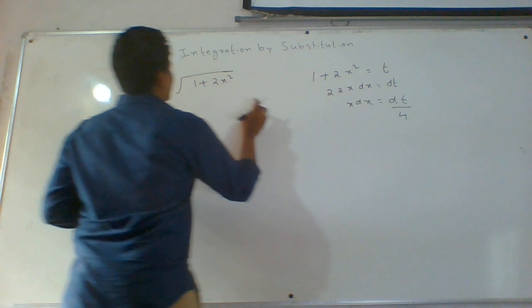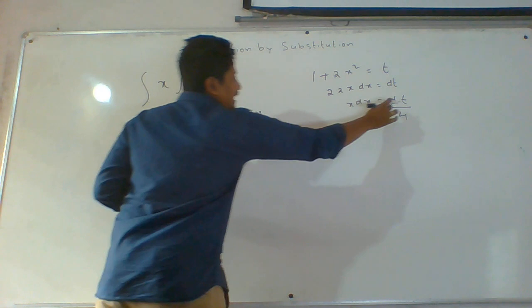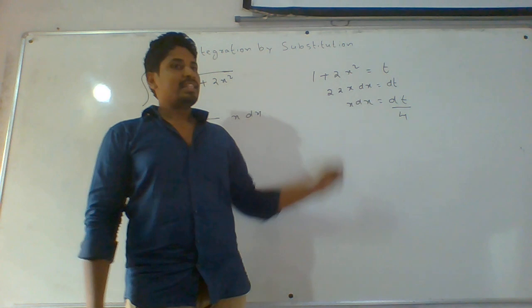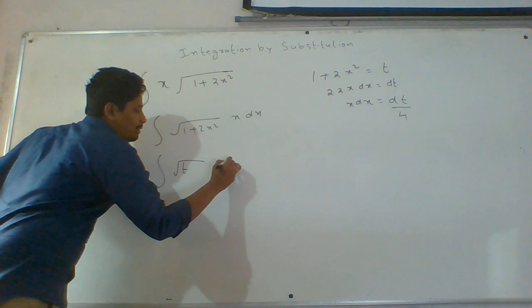We put x dx on this side. In the place of x dx, we can write dt by 4. And in the place of 1 plus 2x square, we can write t — root t. This will become dt by 4.